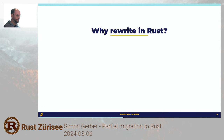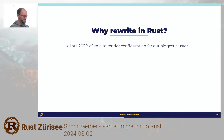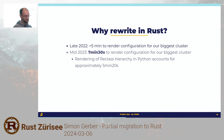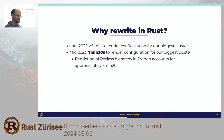So what we rewrote in Rust is reclass — the YAML rendering stuff. Why did we decide to rewrite it? It started to get slower and slower to render configs for our bigger clusters. We were at over five minutes at the end of 2022, it got worse — we were at seven and a half minutes middle of last year. And when we started profiling, we realized rendering reclass in Python accounts for approximately five and a half minutes of that.